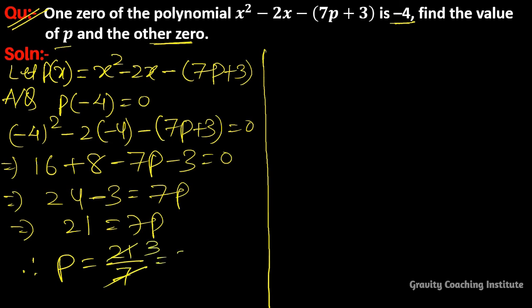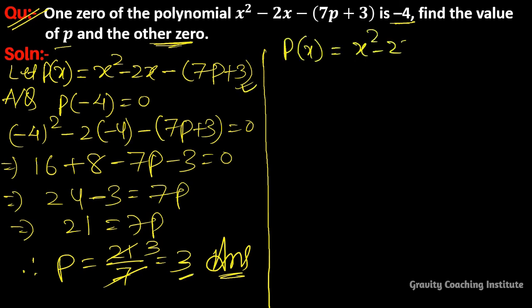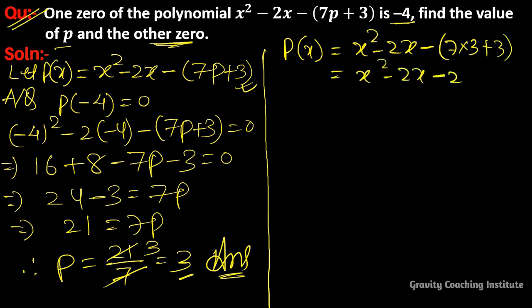Therefore p = 21/7 = 3. So one answer is p = 3. Now to find the other zero, we substitute p = 3 back: x² - 2x - (7×3 + 3) = x² - 2x - 24.